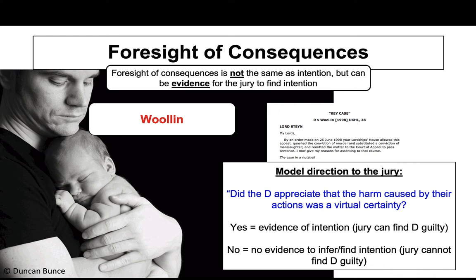If the jury is confused, the precedent from Woollen must be followed precisely for consistency — otherwise the defendant may appeal and likely win. The direction is: did the defendant appreciate that the harm caused by their actions was virtually certain? Critically, if the answer is yes, it does not automatically mean there is mens rea, but the jury can choose to find the defendant guilty because it is evidence of mens rea.